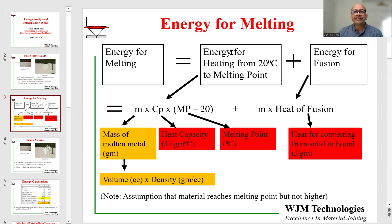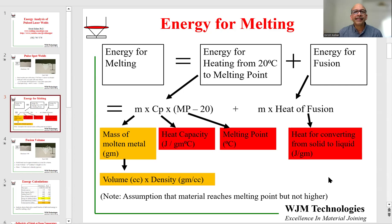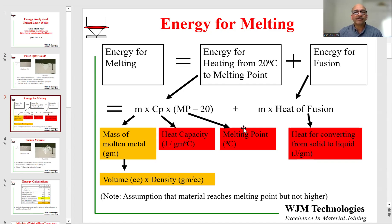Energy for melting is the energy for heating the component from 20 degrees to the melting point — just to warm it up to the melting point. Energy for fusion is the energy required to convert from solid state to liquid state at the melting point. The energy for melting is given by mass times heat capacity times difference in temperature. The energy for actual fusion is mass times heat of fusion, which is in units of joules per gram. The numbers including heat capacity, melting point, and heat of fusion for the two materials we get from literature.